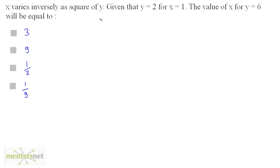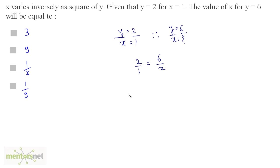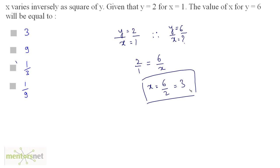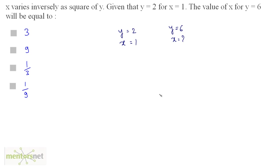A common mistake: one might think x is proportional to y and take the ratio — writing 2 by 1 equals 6 by x — getting x equal to 3 and marking option 1. But that is not the correct answer, because x is not directly proportional to y. x is inversely proportional to the square of y. So you cannot solve it traditionally using proportion. Let us remove this and solve correctly.